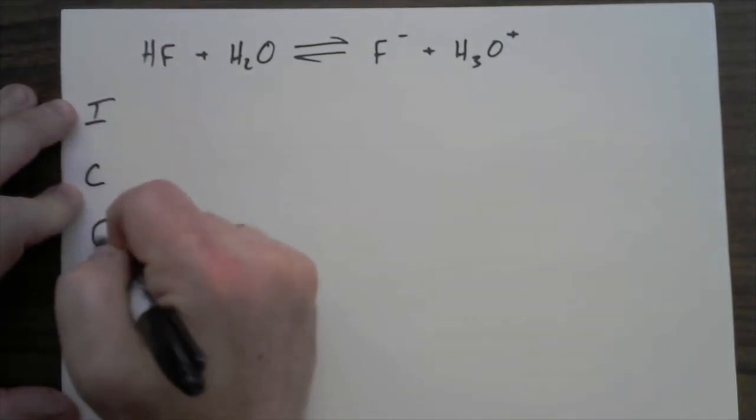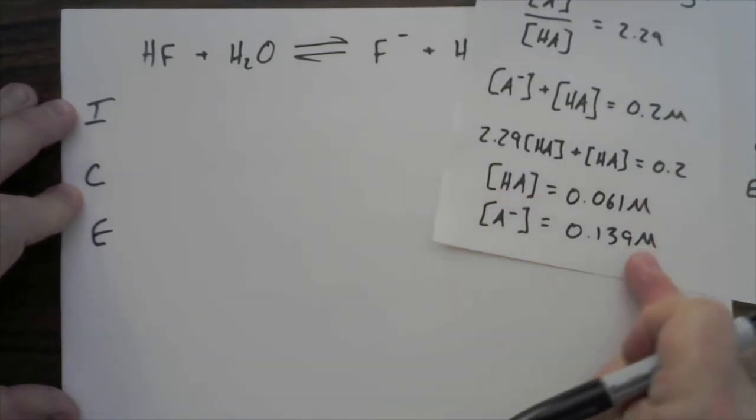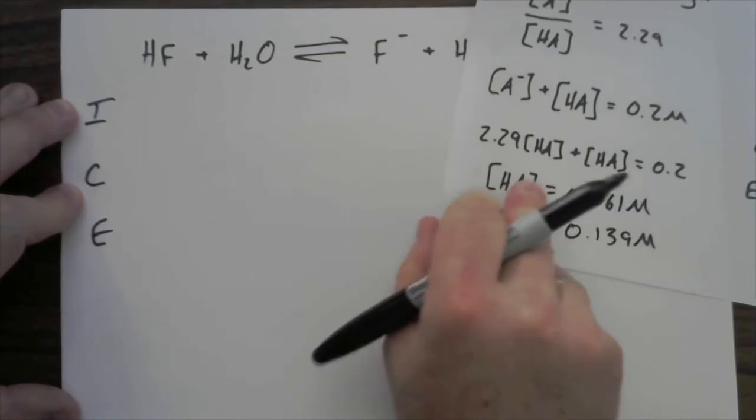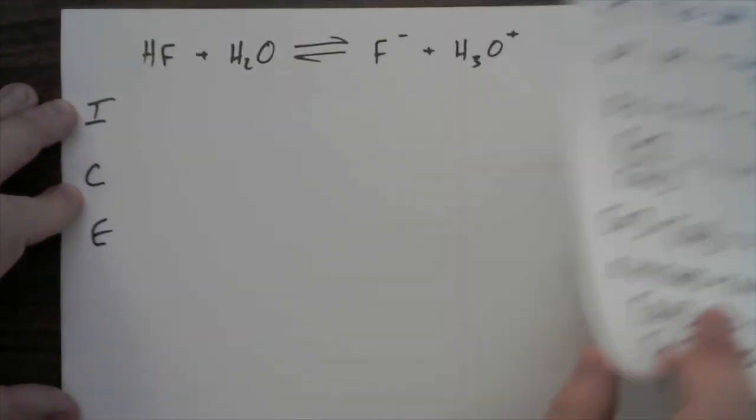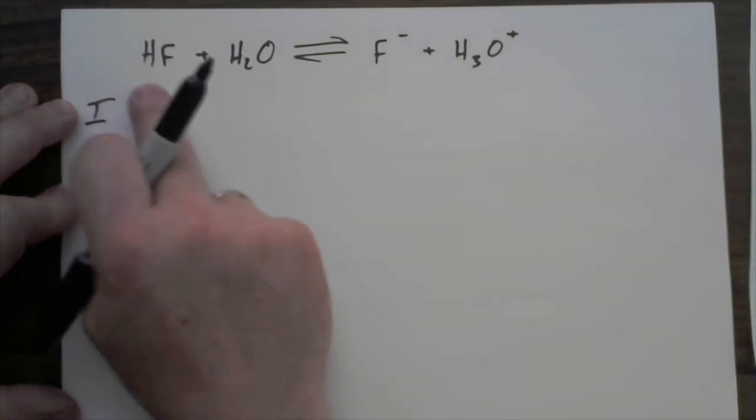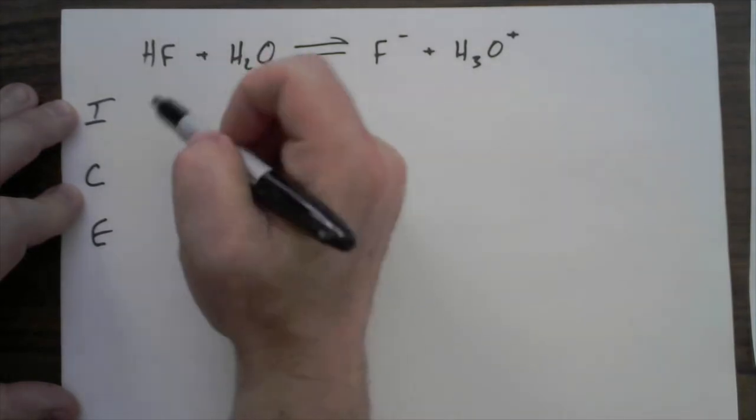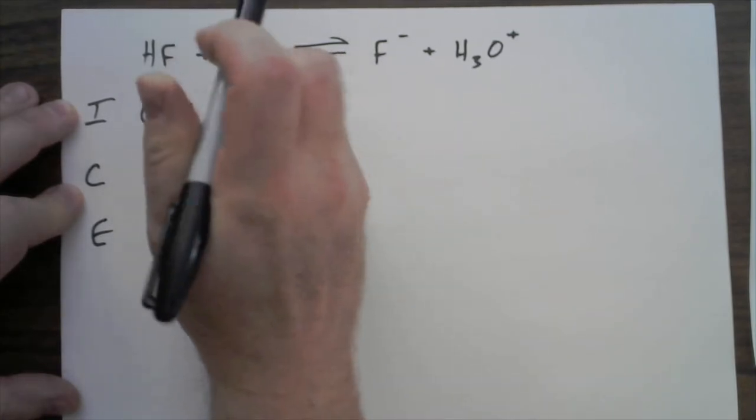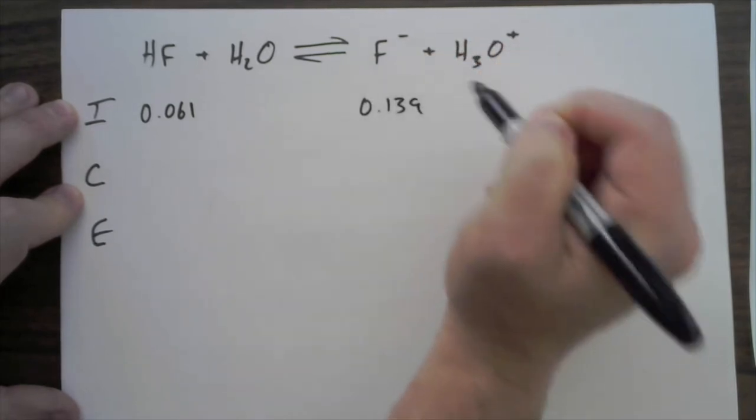In this problem we're saying, hey, I have this buffer and we're going to start with these molarities of these two different species. Now I'm not as concerned with how we got that concentration—maybe it was through this method that we did in the previous problem, maybe we're just directly adding HF and adding something like a potassium fluoride to solution. But my initial concentrations on these things are going to look like this.